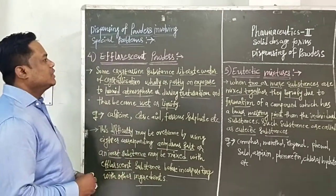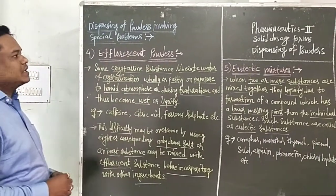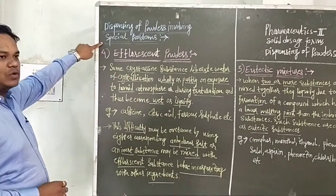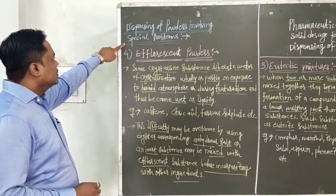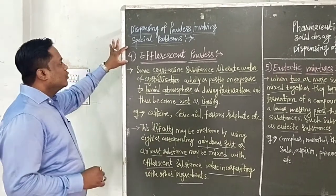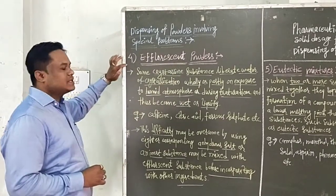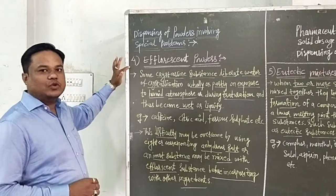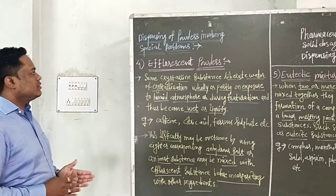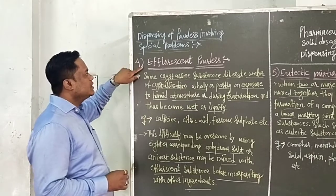Today's subject is Pharmaceuticals 2, Chapter 4 on solid dosage forms. The sub-topic is dispensing of powders, specifically the special problems involved. In the last lecture we covered volatile substances, hygroscopic substances, and deliquescent substances. In this lecture we will see the fourth special problem which arises during dispensing of powders — efflorescent powders.